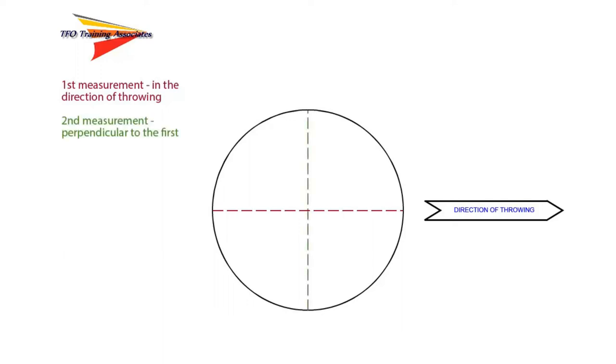Next, measure the diameter of the circle on a line perpendicular to the axis you just used, making sure that it passes over the reference point you just marked. Again, mark the appropriate radius point, either 1.0675 or 1.25 meters.